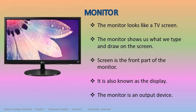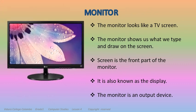Now we are going to learn about the monitor. The monitor looks like a TV screen. The monitor shows us what we type on the screen. The screen is the front part of the monitor. It is also known as the display. The monitor is an output device. You will learn about output devices later.